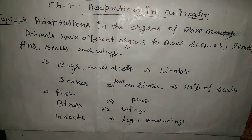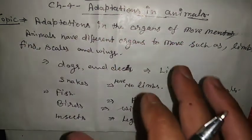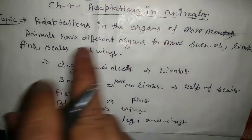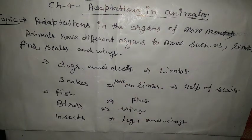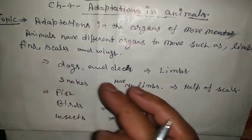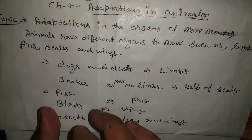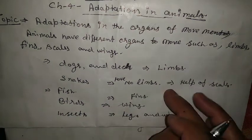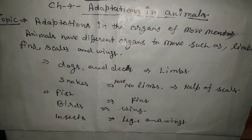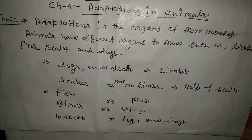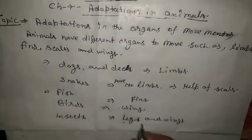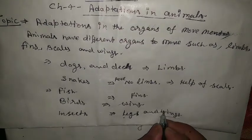So again, adaptations in the organs of movement: animals have different organs to move, such as limbs, fins, scales, and wings. Dogs and deer have limbs, snakes move with the help of scales, fish have fins, birds have wings, and insects have legs and wings for movement.